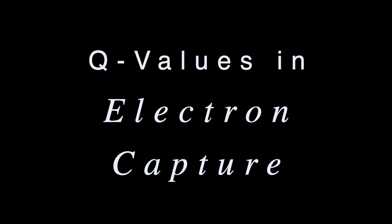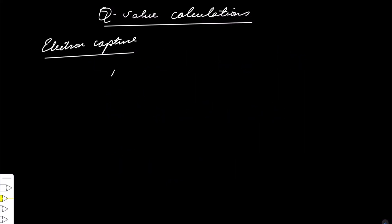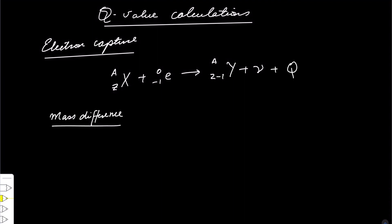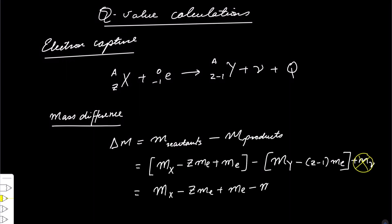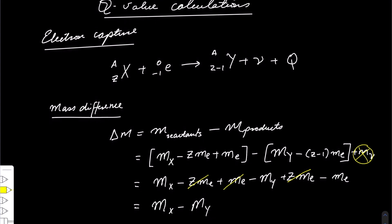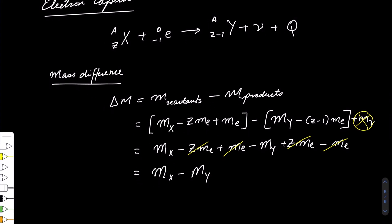During the electron capture process a proton turns into a neutron, and the general equation is as shown. The mass difference is equal to the difference in atomic masses of the parent and daughter nucleus. We then take the difference in masses multiplied by c squared to get the Q value of the electron capture radioactive decay.